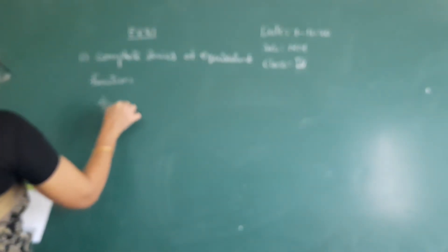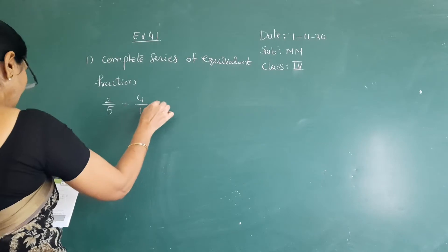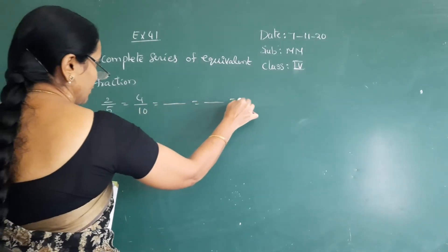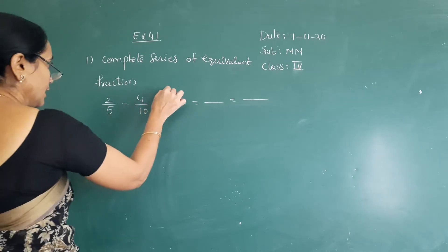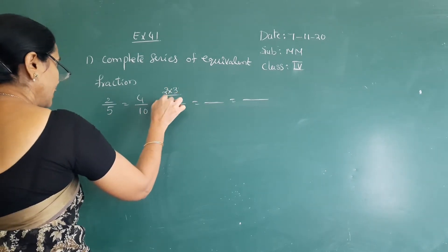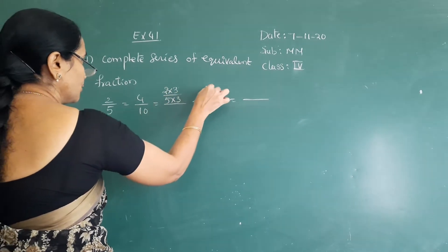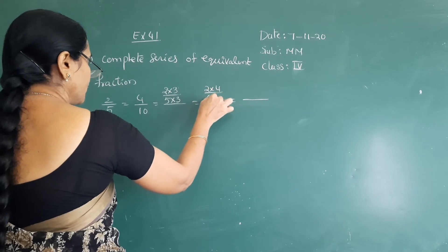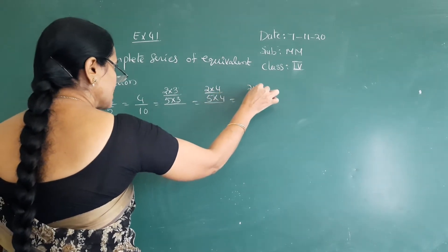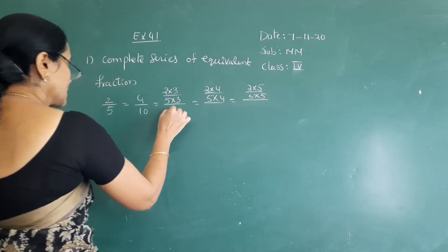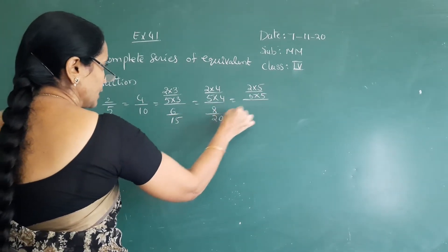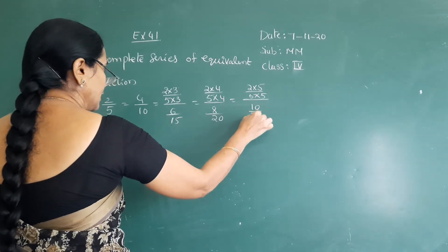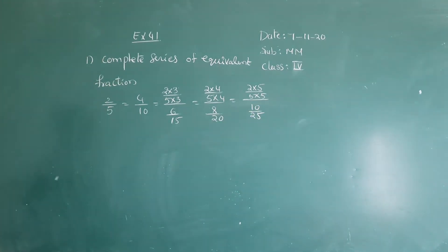I am going to give you 2 by 5. They are asking to write the next 3 equivalent fractions. So: 2 twos over 5 twos = 4 by 10. Next: 2 threes over 5 threes. Then 2 fours over 5 fours. And 2 fives over 5 fives. So the next three equivalent fractions are 4 by 10, 6 by 15, and 8 by 20.